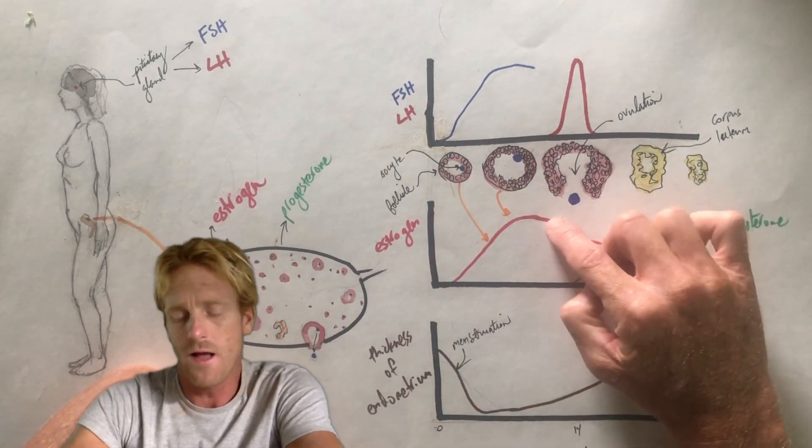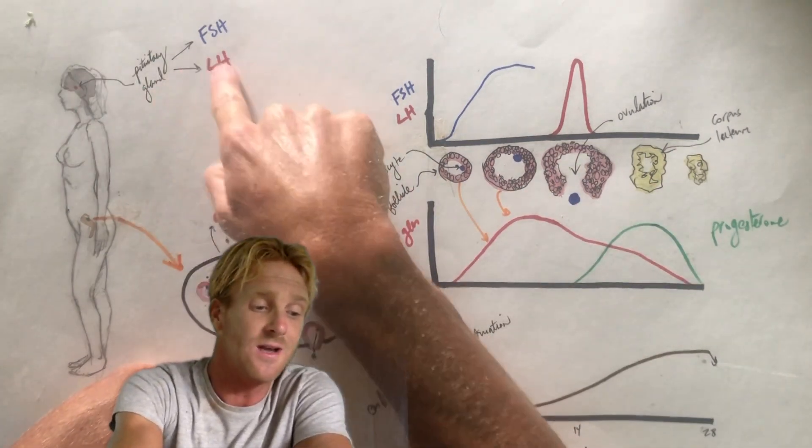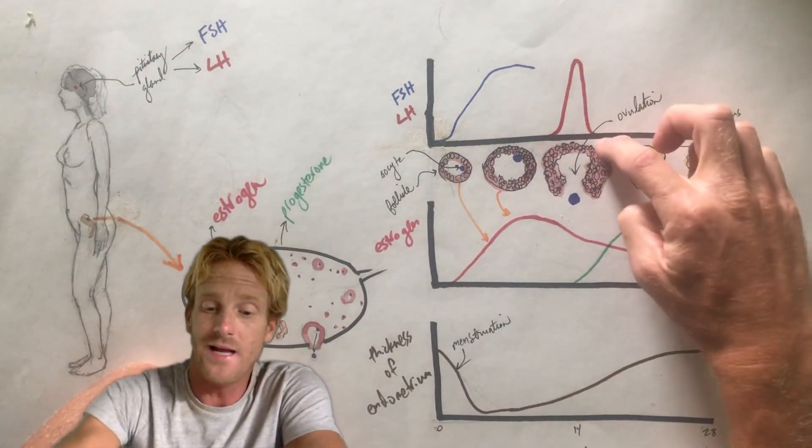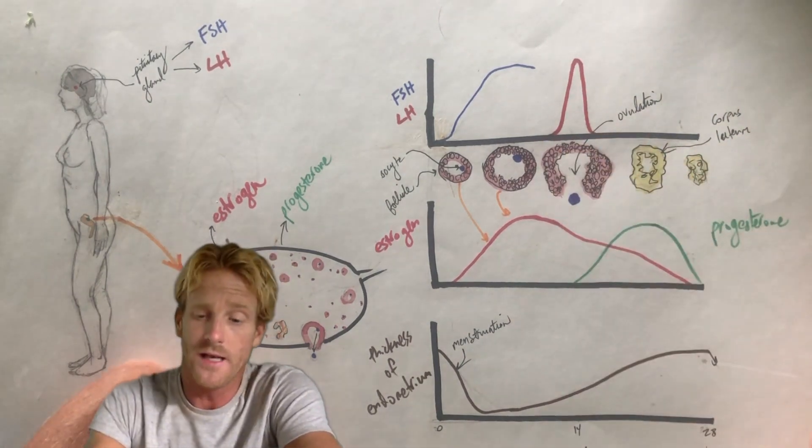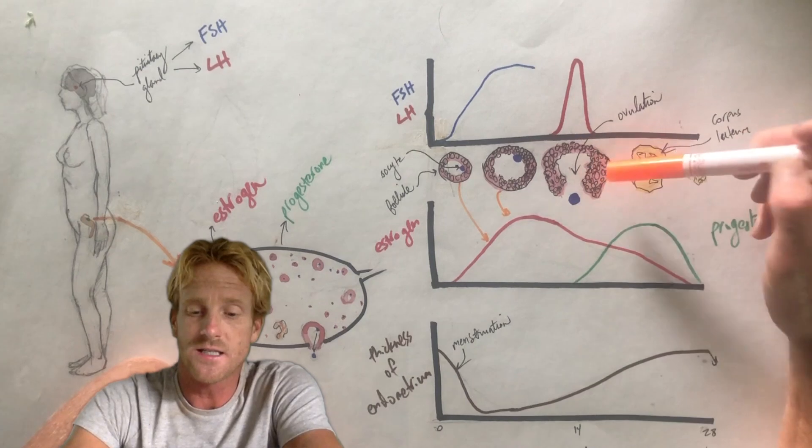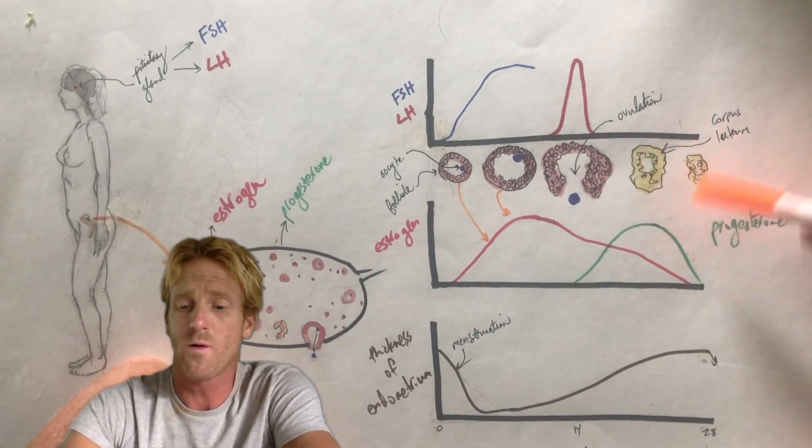Estrogen is going to peak around mid-cycle, and this peak in estrogen is going to cause the pituitary gland to release another hormone called LH. This surge in LH is going to cause the dominant follicle to release the egg, that's ovulation, and it's going to cause the leftover follicle to become a completely different structure called the yellow body or the corpus luteum.